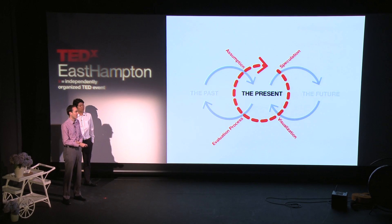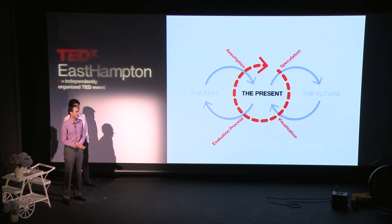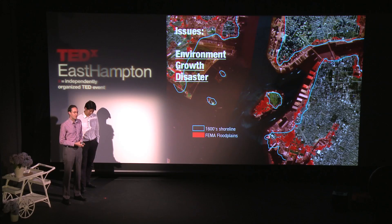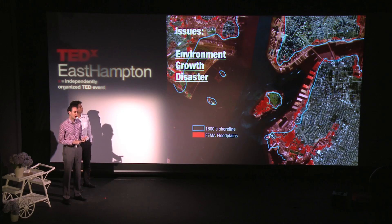Our loop starts with an assumption, goes through this cycle, and based on the evaluation of the speculation, we change our initial assumptions about the present. But before we can speculate about the future history, we want to start with the present future — the one where our cities keep growing the way they have historically. We see three major issues in the present future for New York City, though these could apply to almost any city: environment, growth, and natural disaster. If New York City continues to grow at current population projections and every undeveloped plot of land is developed to its full potential, there'll be no more room for people by the year 2038.